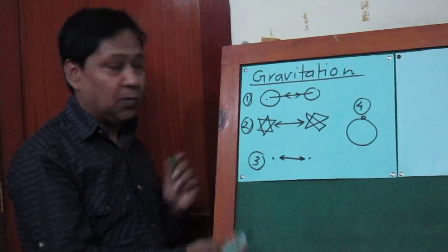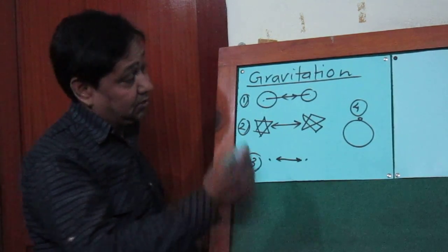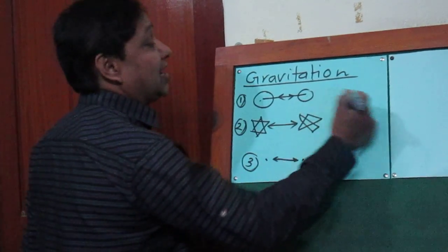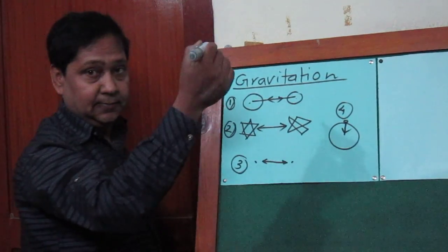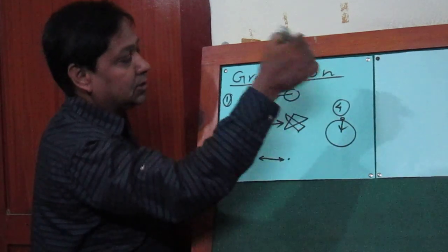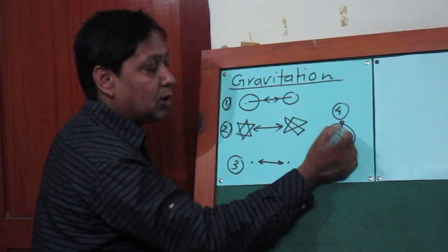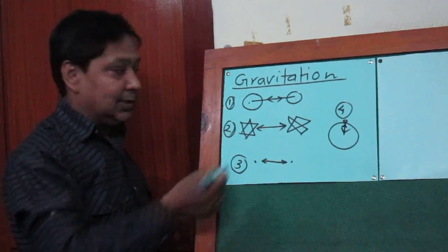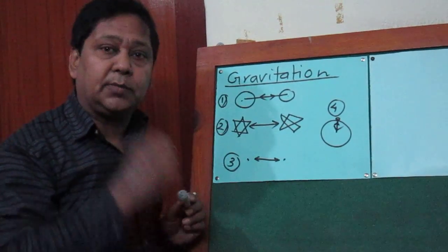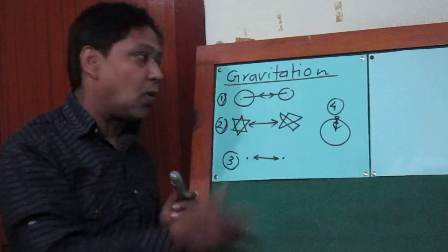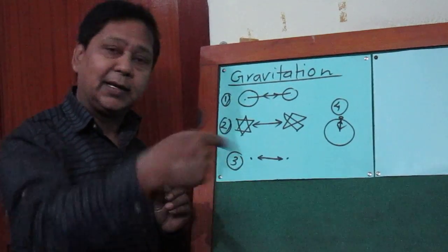Every object attracts another object. Earth also attracts a body lying on its surface towards its center, and this body lying on the surface of the earth also attracts earth towards its center. Thus, the force of attraction between any two bodies of this universe is called gravitation or gravitational force.